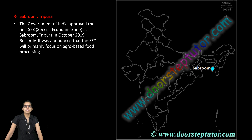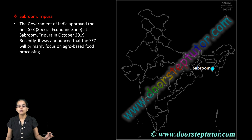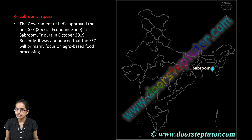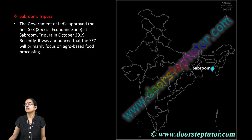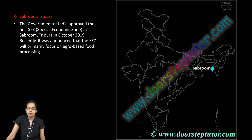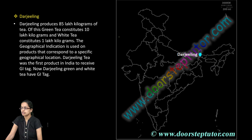Saburum in Tripura is an important place. You have the first approved Special Economic Zone established by the government in Tripura in 2019, mainly focusing on agro-based food processing industry.